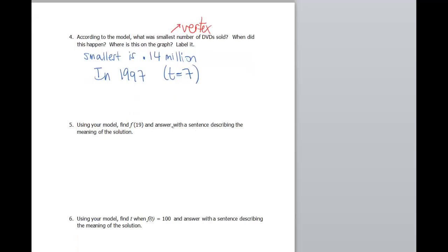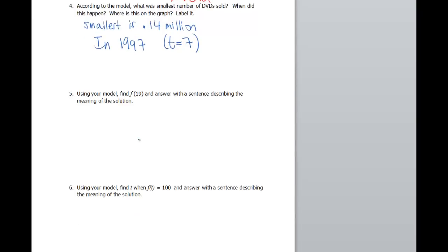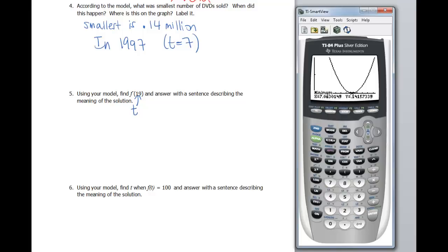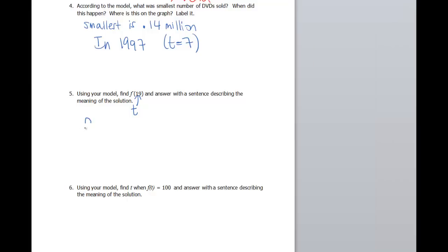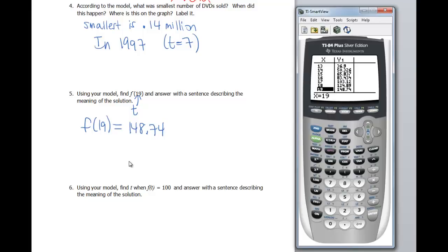Okay, using your model, find f of 19 and answer with a sentence describing the meaning of the solution. Okay, so 19, because that's inside the parentheses, that's going to be my input. So that's my t, or in this case, my x, if I go to look at my calculator. So I'm going to look at my table, since I'm too lazy to plug this in. And let's toggle on down to 19. Plus, with all these decimals, it's just going to be really messy. So I think it's a lot easier to let the calculator do the work for us. Okay, so at 19, we have 148.74. So f of 19 was 148.74. Let me double check that, make sure I remembered that correctly. Yep, looks good.